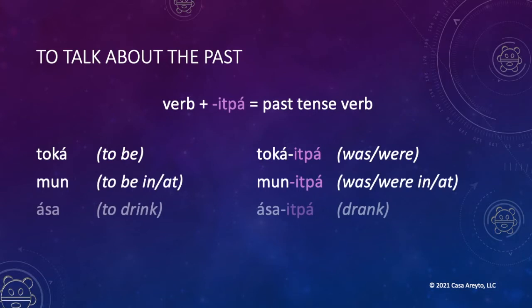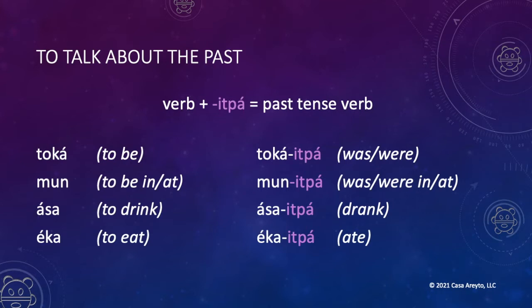Asa: to drink. Asaitpa: drank. Now you have a new verb — Eka: to eat. Ekaitpa: ate. Iba: to go. Ibaitpa: went.